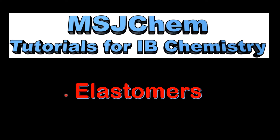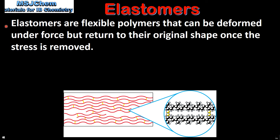This is MSJChem. In this video I'll be looking at elastomers. Elastomers are flexible polymers that can be deformed under force but return to their original shape once the stress is removed.